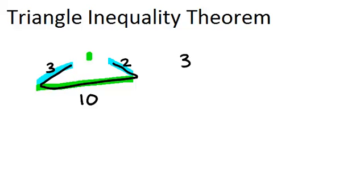So because 3 plus 2 equals 5, and 5 is less than 10, this would not make a triangle. So let's try again.